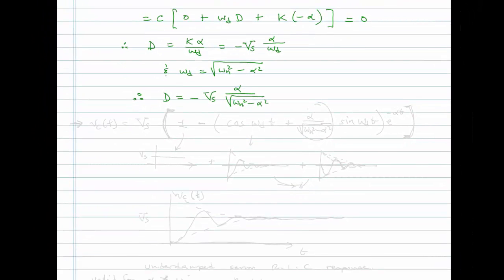Writing the final solution: V_C(t) = V_S · {1 - [cos(omega_D·t) + (alpha / sqrt(omega_N² - alpha²))·sin(omega_D·t)] · e^(-alpha·t)}.